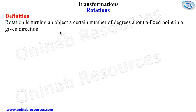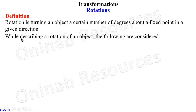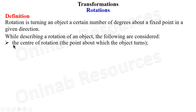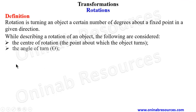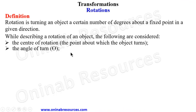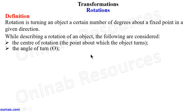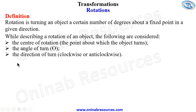When describing a rotation of an object, the following are considered: one, the center of rotation — that is the point about which the object turns; two, the angle of turn — that is the number of degrees through which the object is going to be turned; and three, the direction of turn.